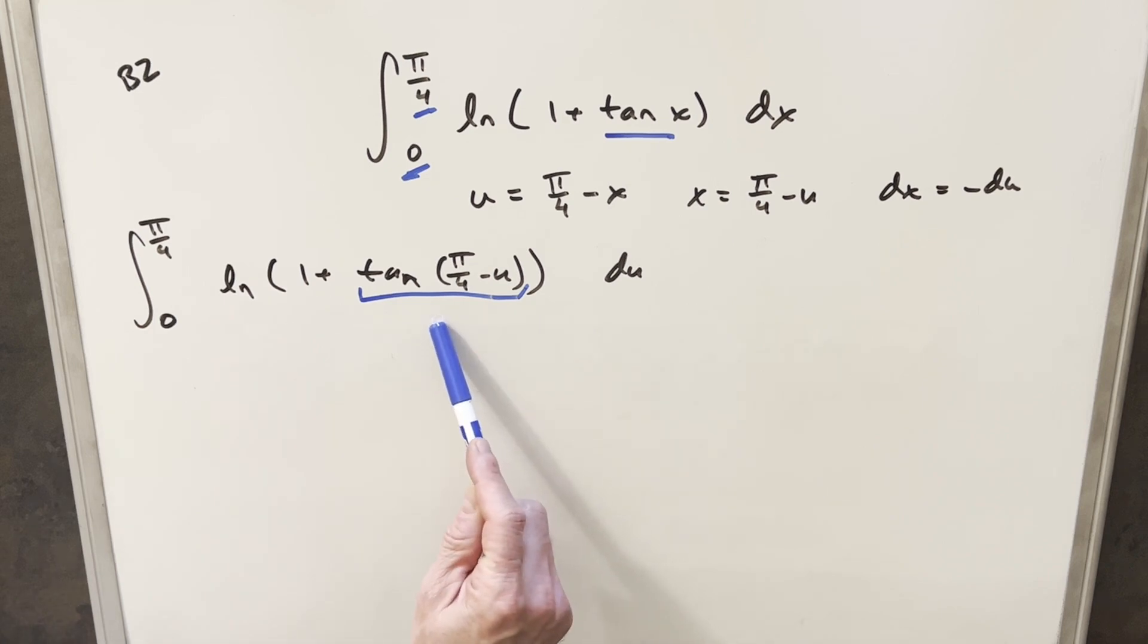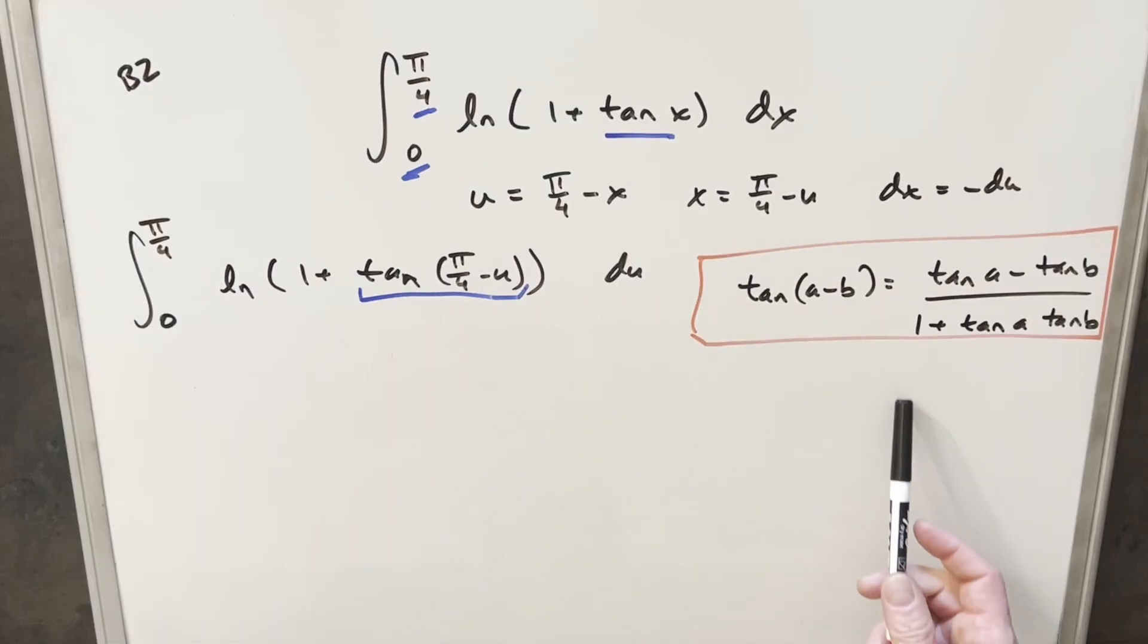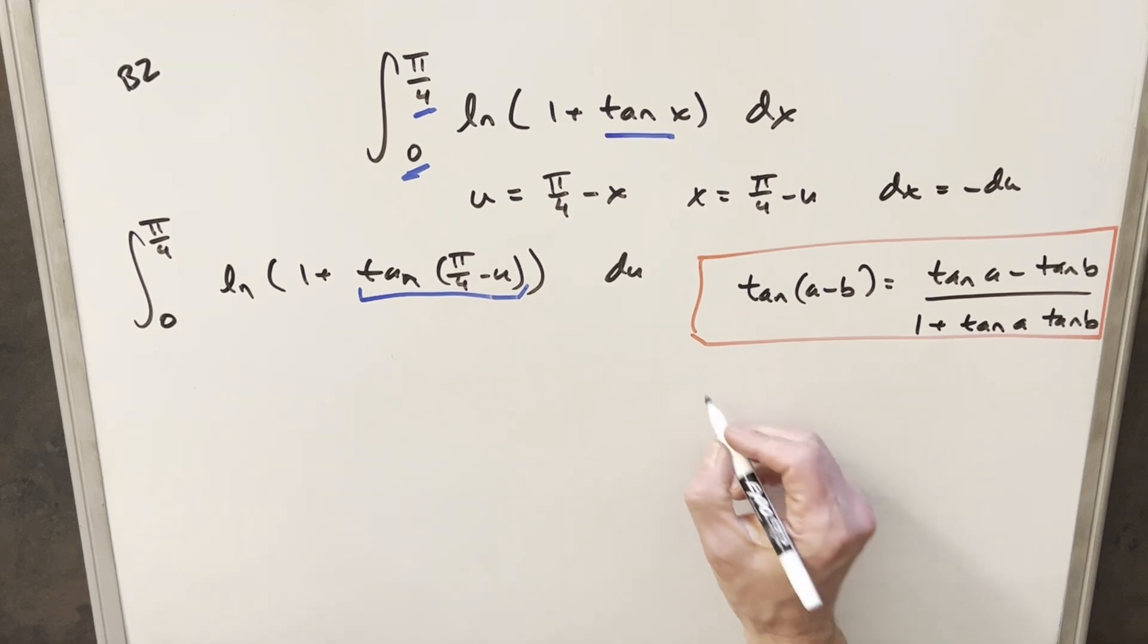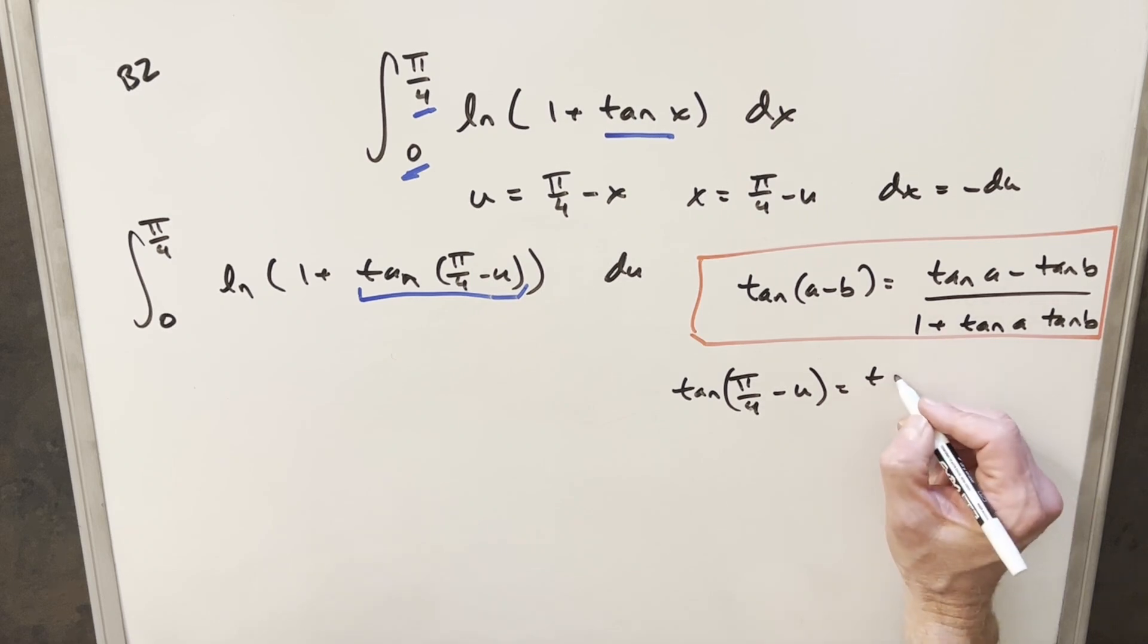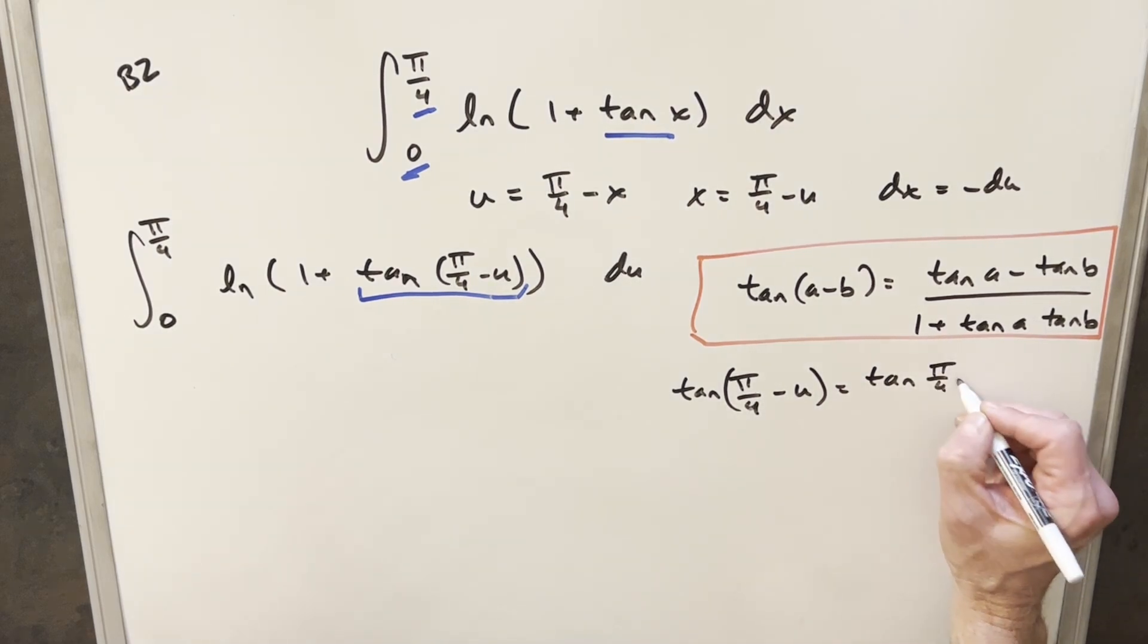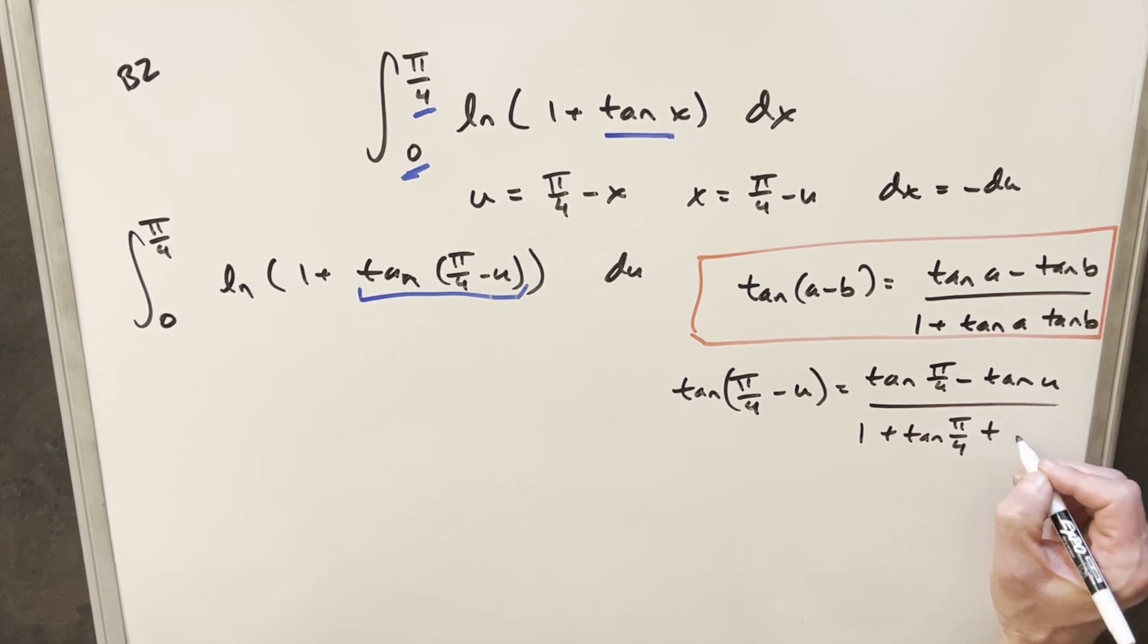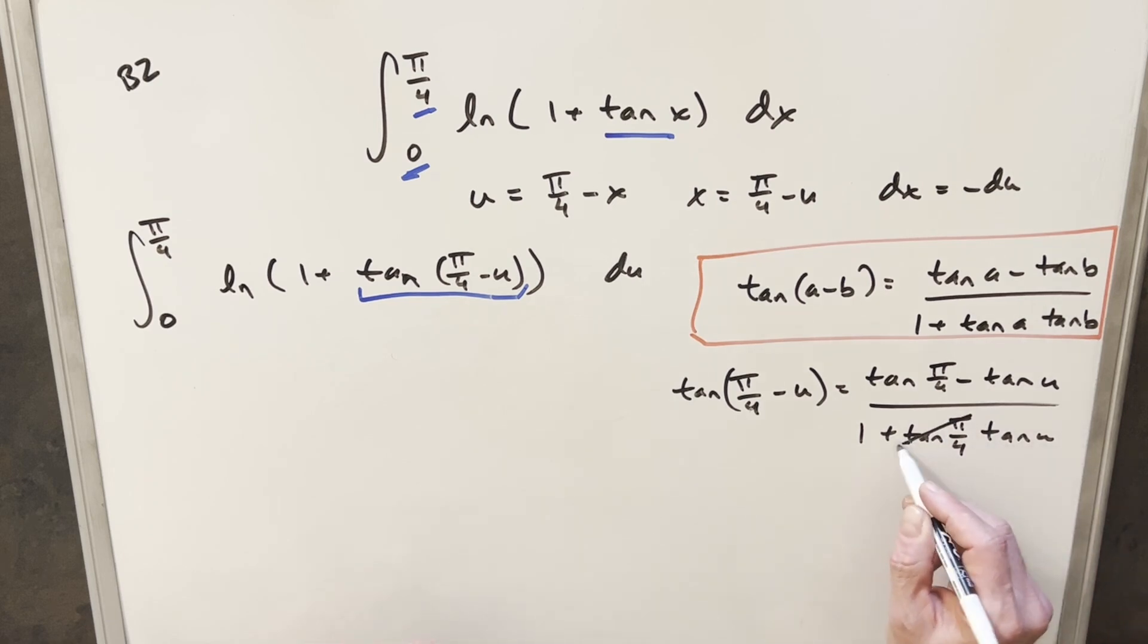What I want to do for this is use the angle difference formula for tangent. We have the formula over here to the right, and we'll use this where our A value is going to be π/4, and the B value is going to be U. So first, up top, we're going to have tangent of A, which is tangent π/4 minus tan U plus 1 over 1 plus tan π/4 times tan U. Now, tan of π/4 is just 1. So what we have here is 1 minus tan U over 1 plus tan U.